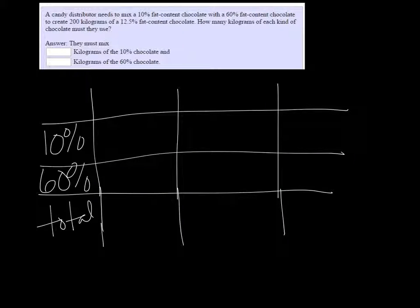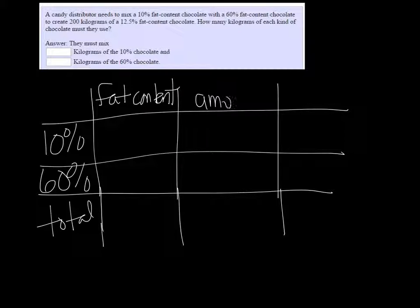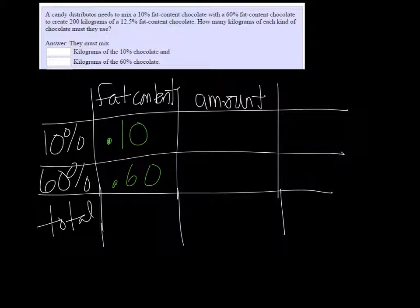We have the fat content of each kind of chocolate times the amount of that chocolate. For instance, in the 10% bar we have a fat content of 10%, so 0.10, and the 60% would be 0.60.